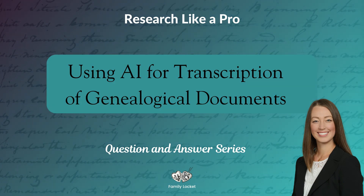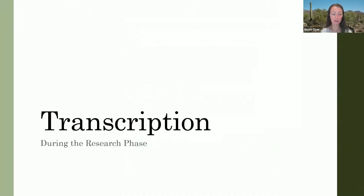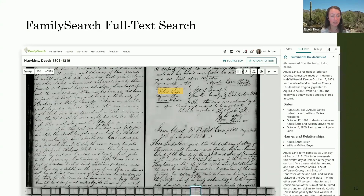Our final tip is about transcription during the research phase. As you're research logging, you will need to do transcription for longer records. You may be using the FamilySearch full-text search — here's an example of finding Robert Dyer in Hawkins County, Tennessee deeds as a witness.